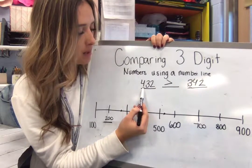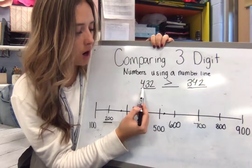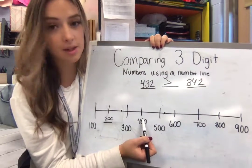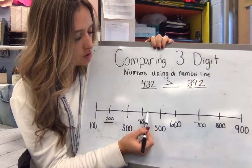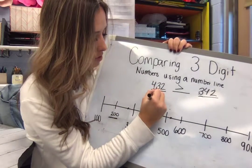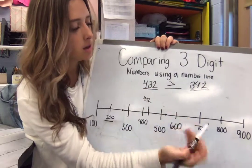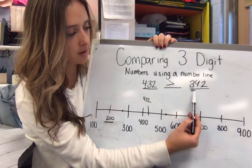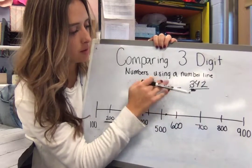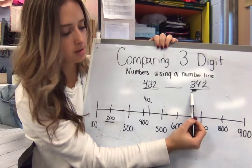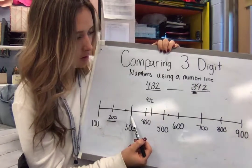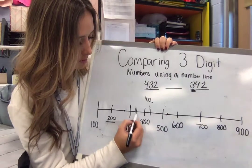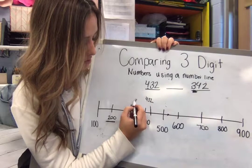Right here, I have how many hundreds? Yeah, 400s. So, I'm going to go right down to 400. I know it's not halfway because it's a little less than 50. So, right here, I'm going to mark 432. And then I'm going to look at 342. How many hundreds do I have? Three hundreds. So, I want to go down to 300. And I'm pretty close to 350. So, it's pretty close to being in the middle here. So, 342.